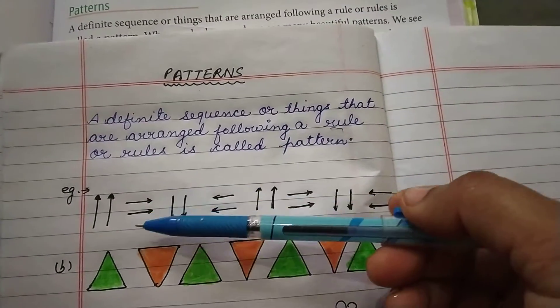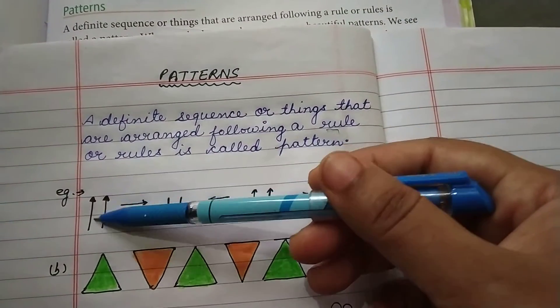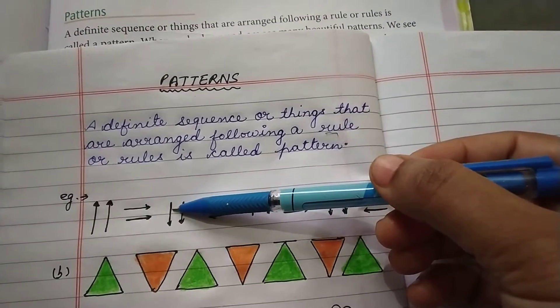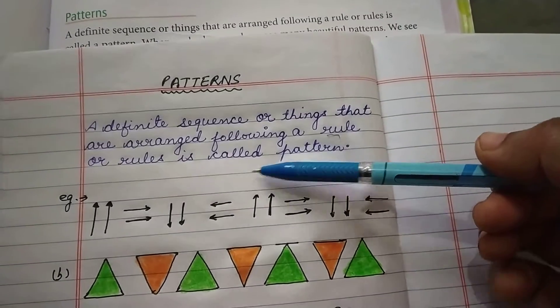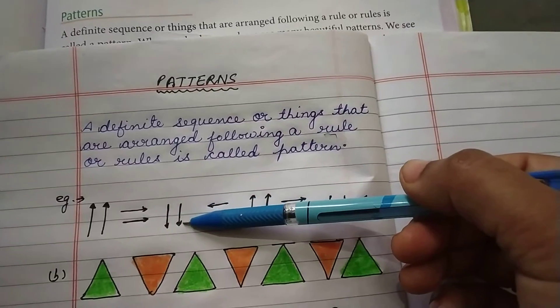For example, the first arrow are in the upward direction, then it moves clockwise, then it goes in right, then downward, then left, and then again upward. So, these arrows are following a specific pattern.